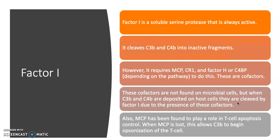Factor I is very important because it is a soluble serine protease that is always active. It can cleave C3B and C4B into their inactive fragments. However, because factor I is always active, it can't simply run around cleaving C3B and C4B wherever it finds them — otherwise it would render the complement system inactive and ineffective. To compensate, it requires cofactors MCP, CR1, and either factor H or C4BP, depending on the pathway.